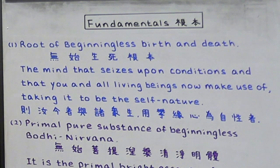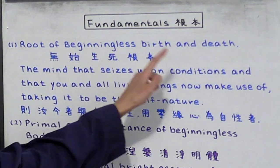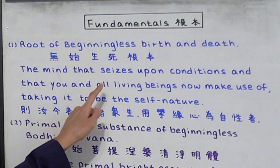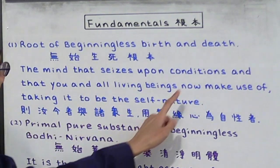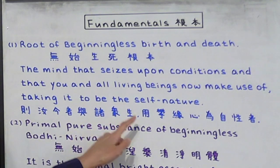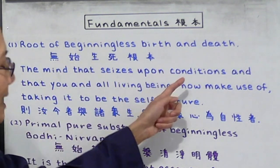So we need to understand the difference between the two. Now let's look at the verses. The root of beginningless birth and death is the mind that ceases upon conditions, and that you and all living beings now make use of, taking it to be the self nature.